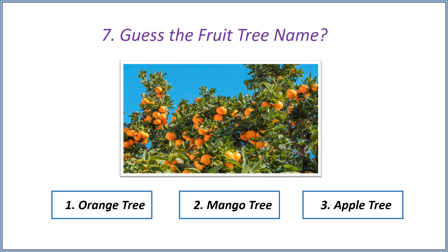Seventh question: guess the fruit tree name. Options — first option: orange tree, second option: mango tree, third option: apple tree. Answer is orange tree.